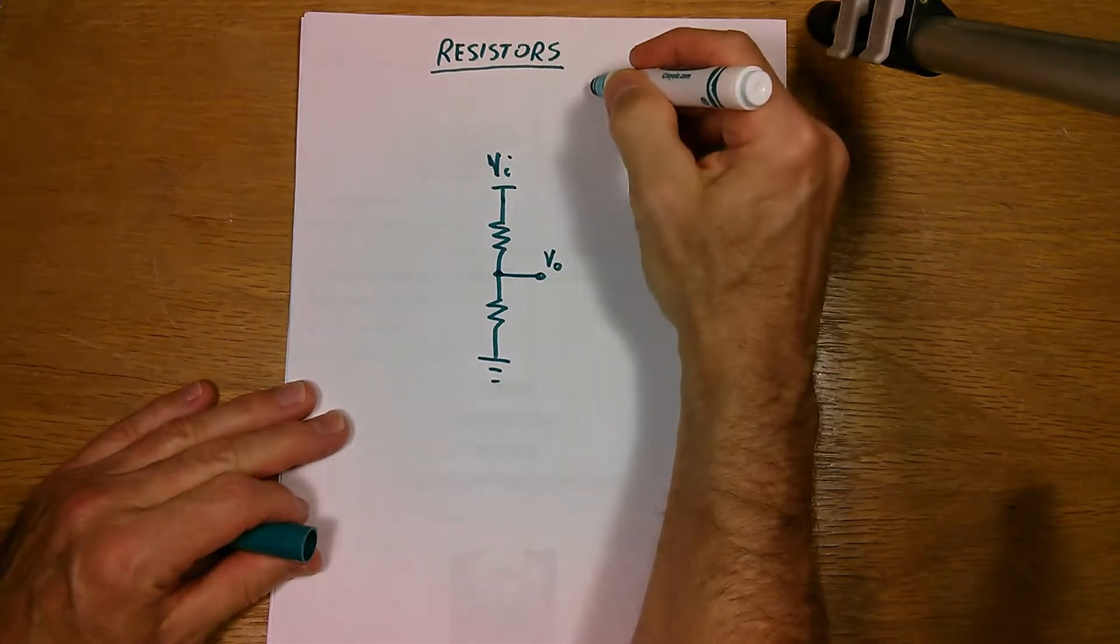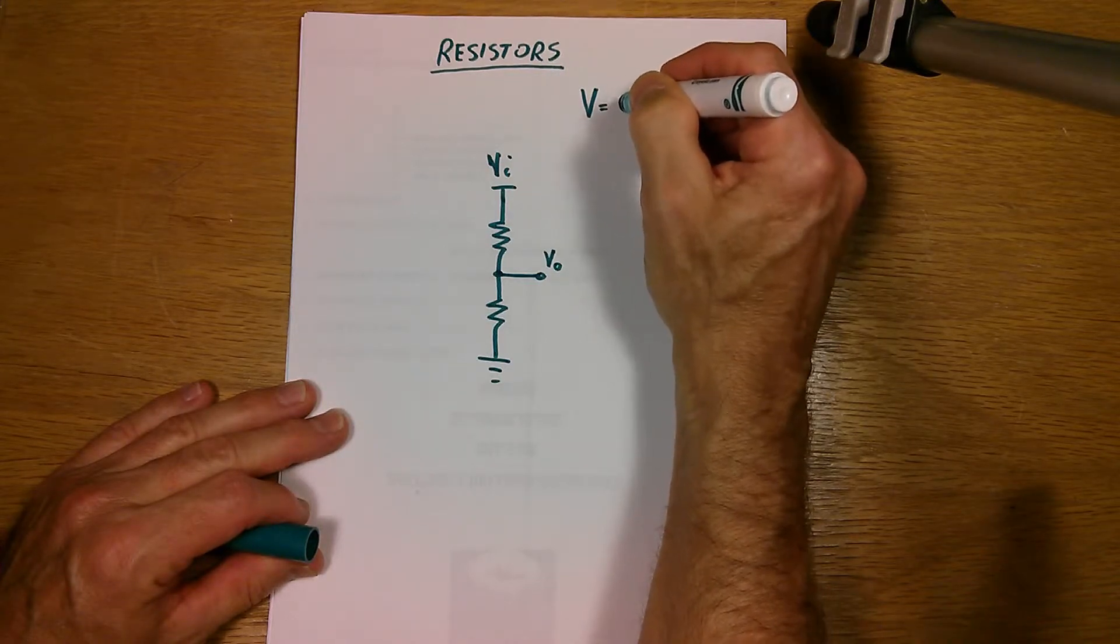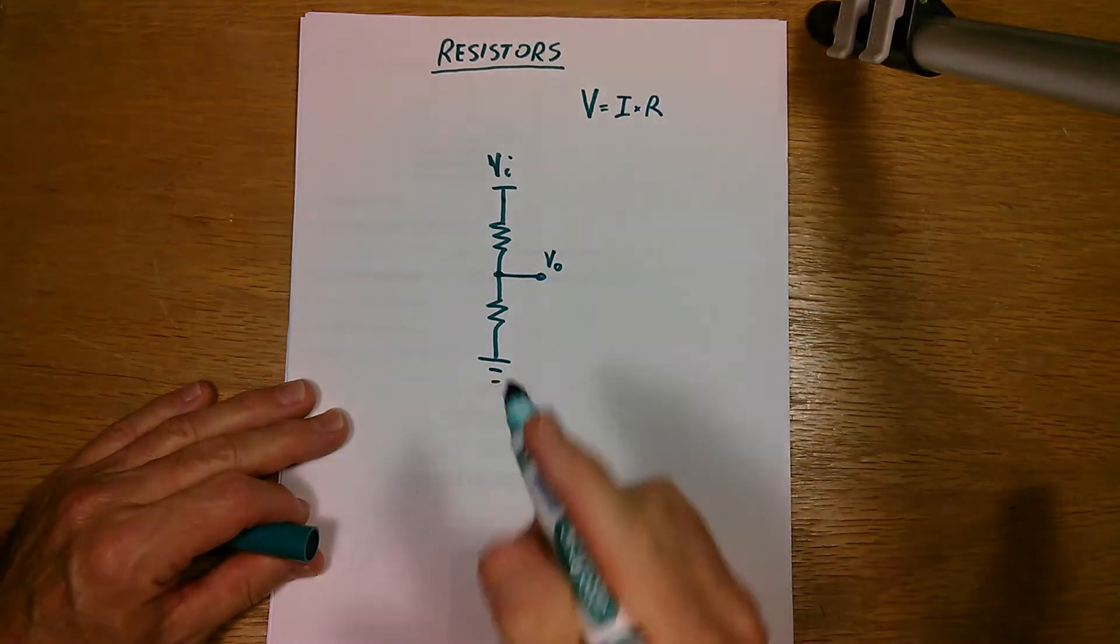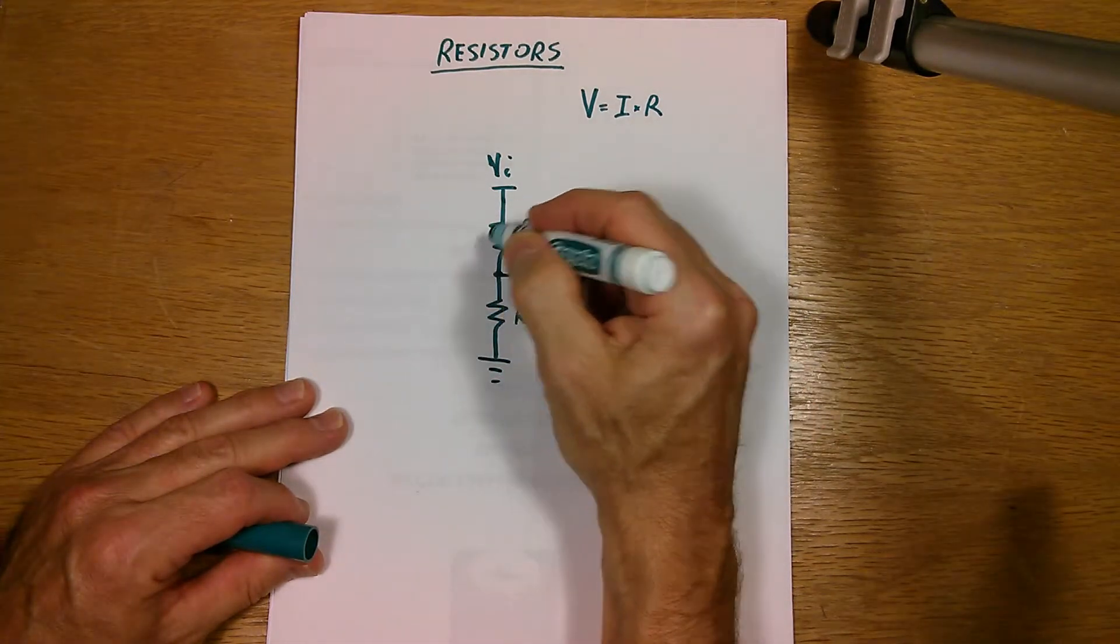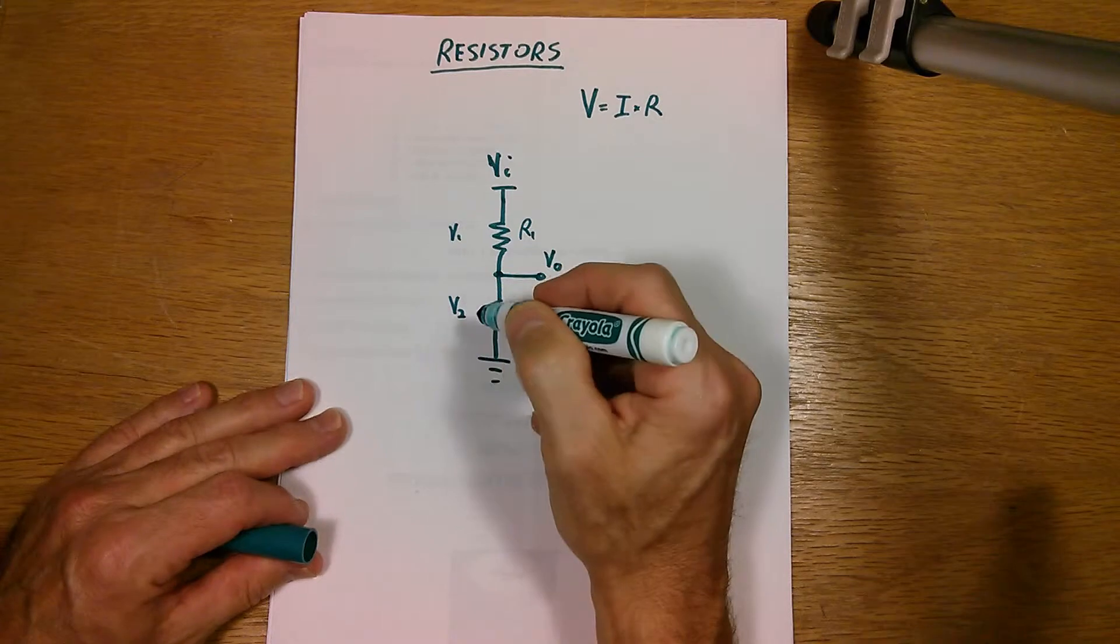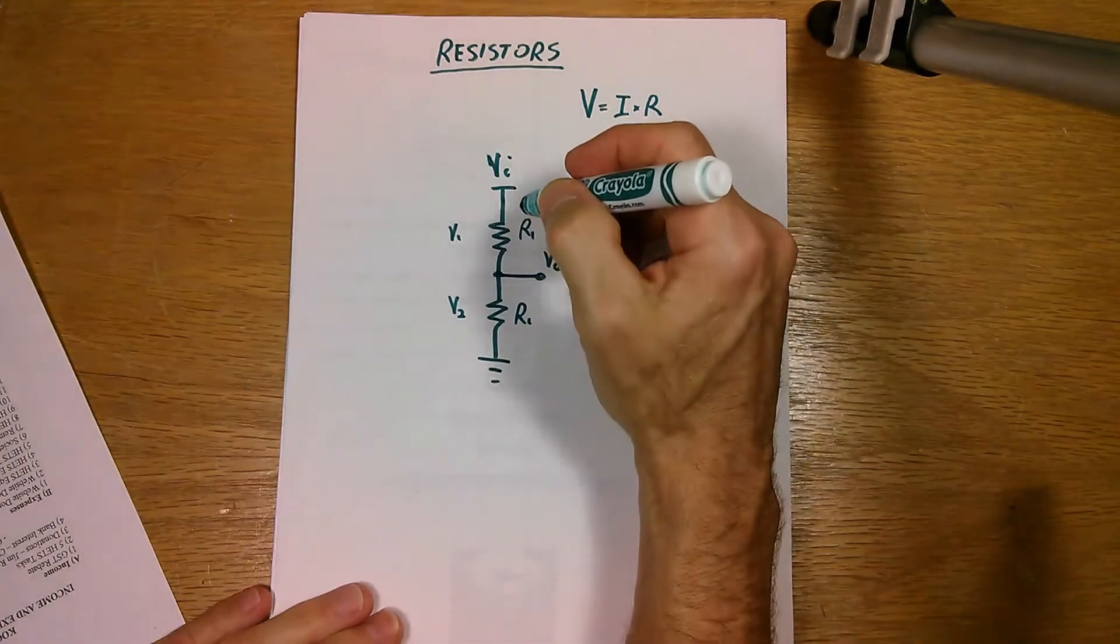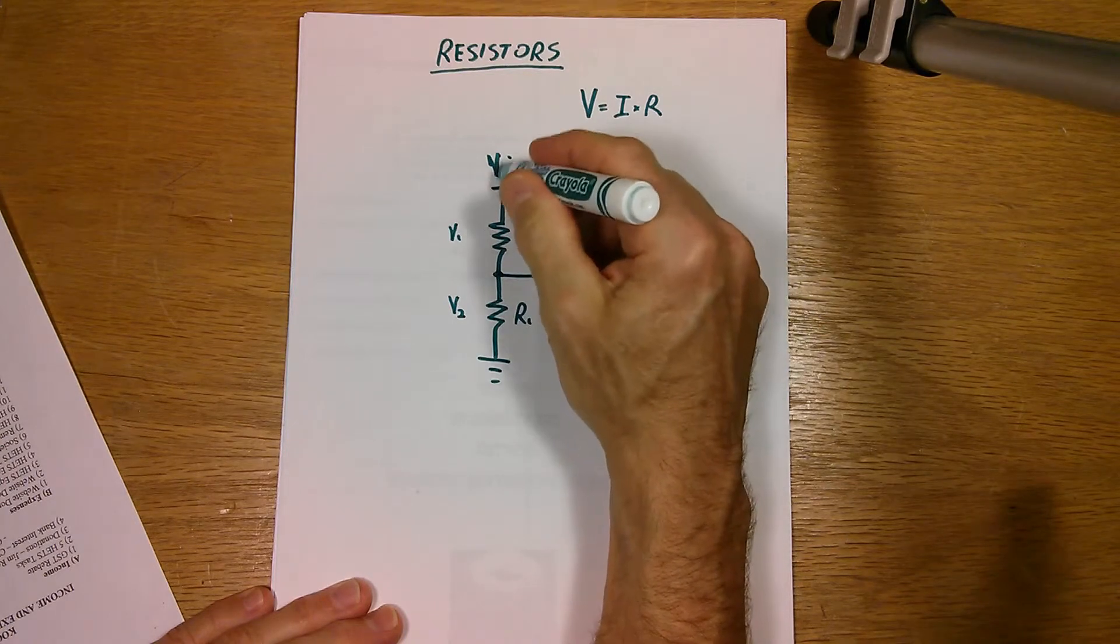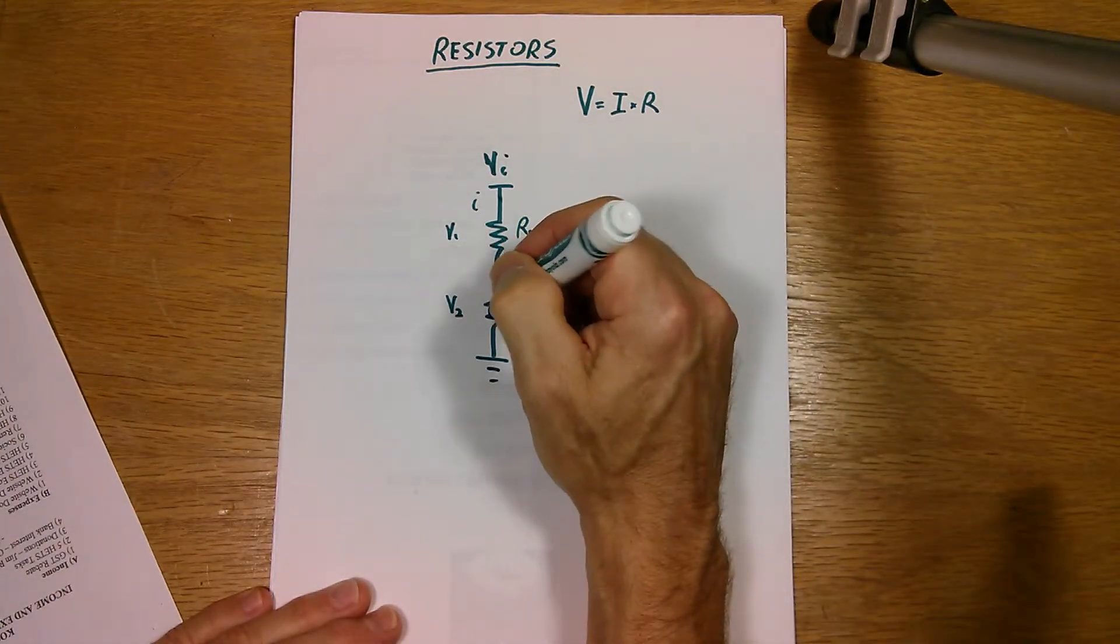So we all know what Ohm's law is. If you have a voltage across a resistance, the voltage is equal to the current flowing through the resistance times the value of the resistance. So I'm going to name these resistors R1, R2. So the voltage across this resistor, we'll call it V1, and the voltage across this resistor, we'll call it V2. Now, let's write down a couple of formulas. We've got a current that's flowing through these two resistors from the power, from the input here. And I'm going to call that lowercase i. And it flows through both resistors.